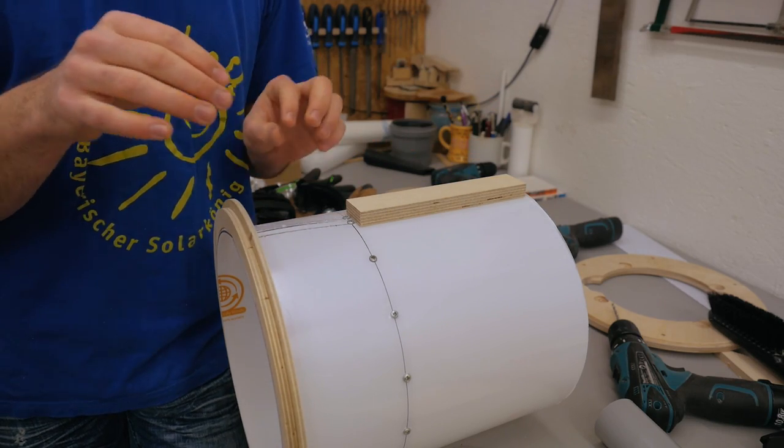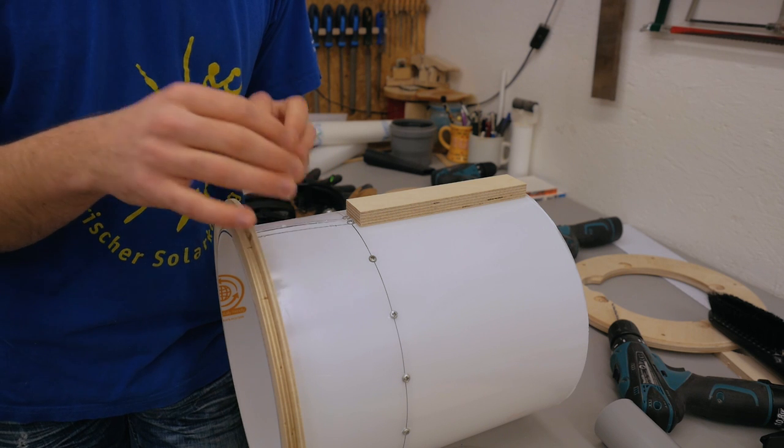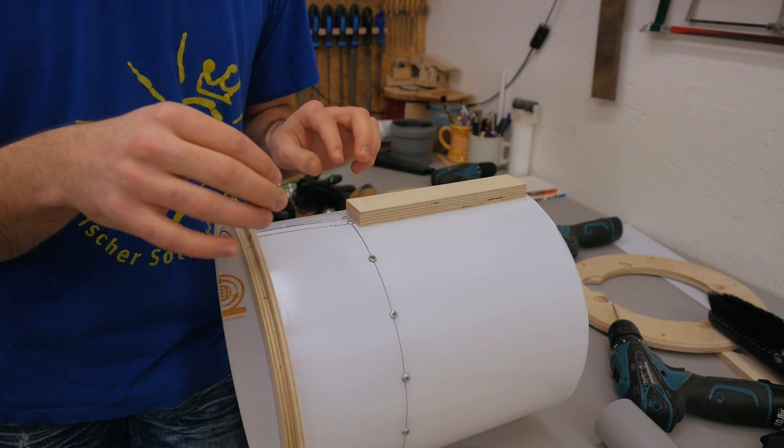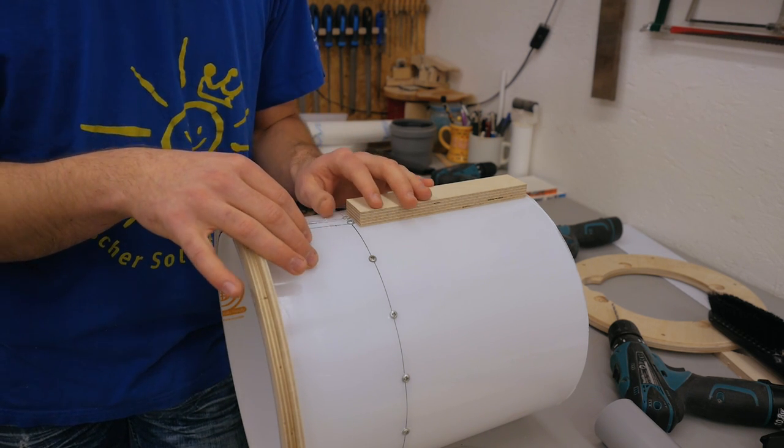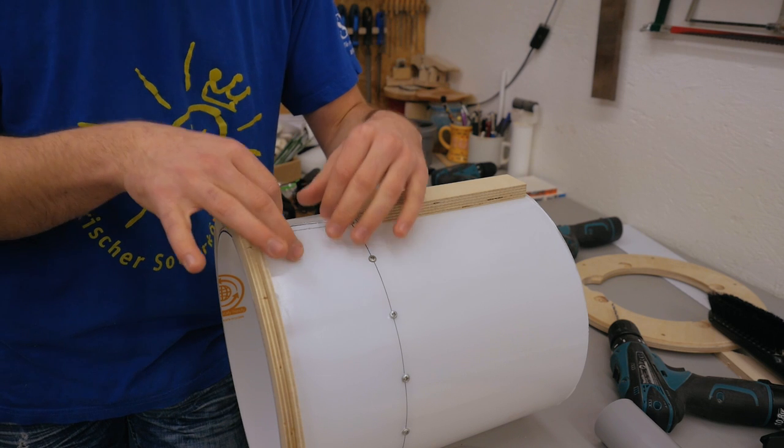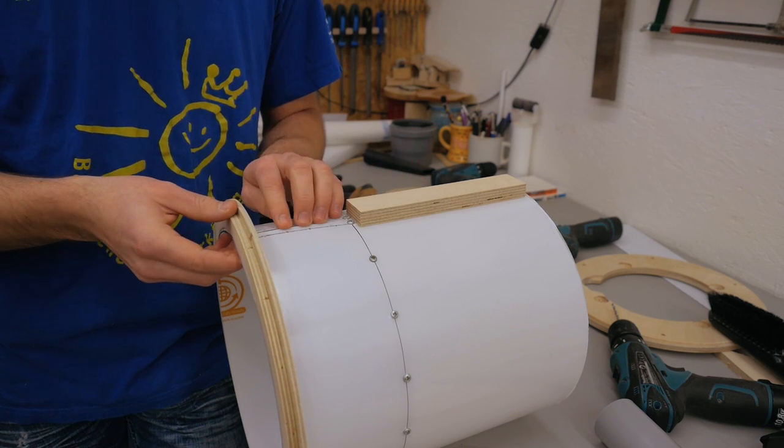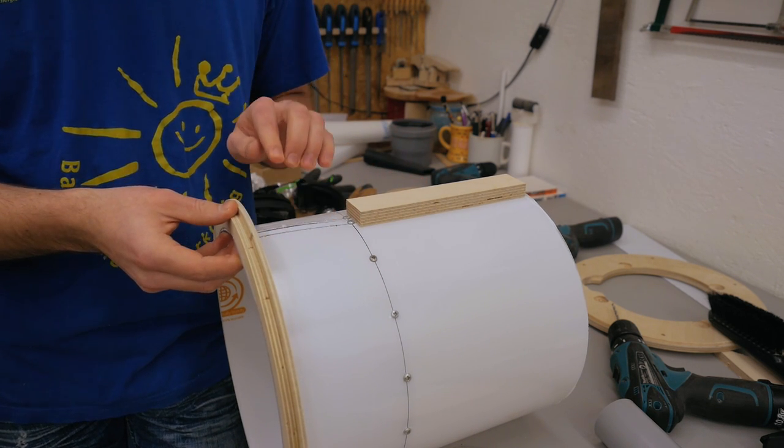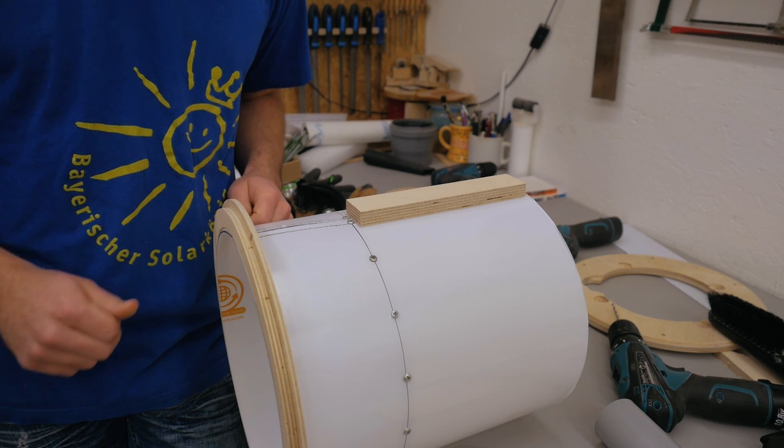This now holds the top section in place, and I could do the same for the lower section, but the inlet chute also needs a place to go. To avoid drilling another hole for the inlet I just make the inlet over the seam here, and then the inlet holds this in shape and I've avoided drilling another hole for the inlet pipe.